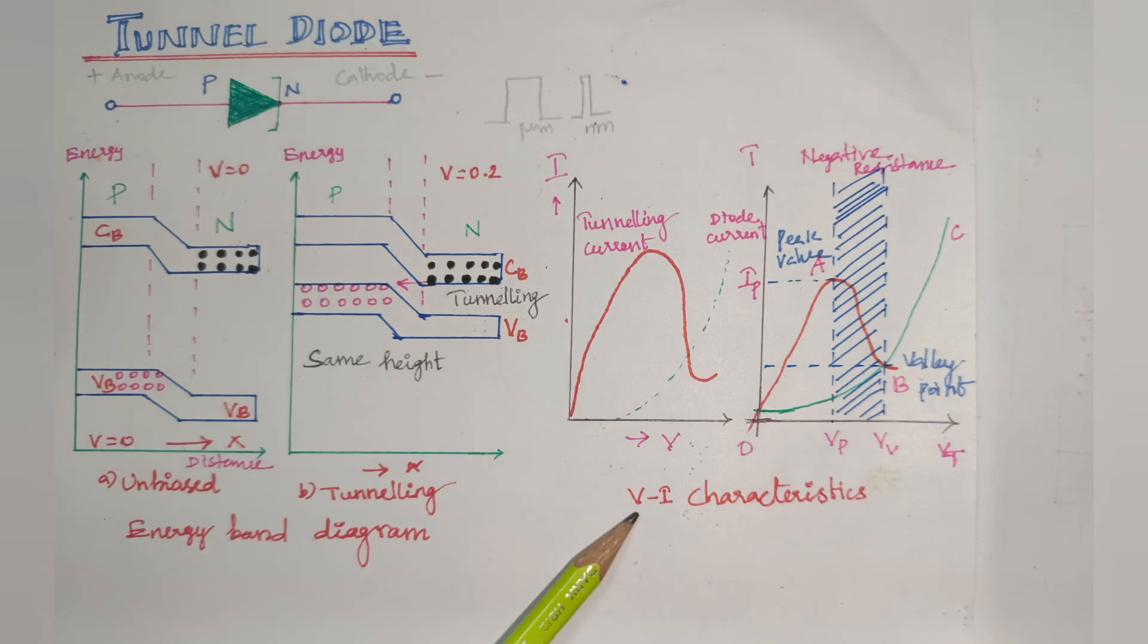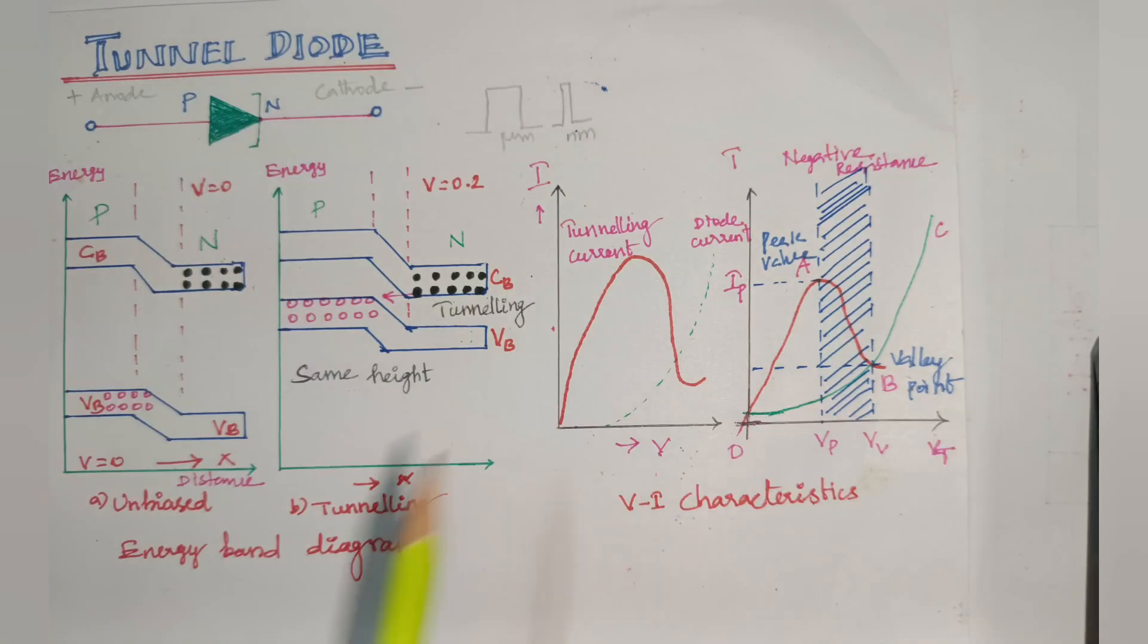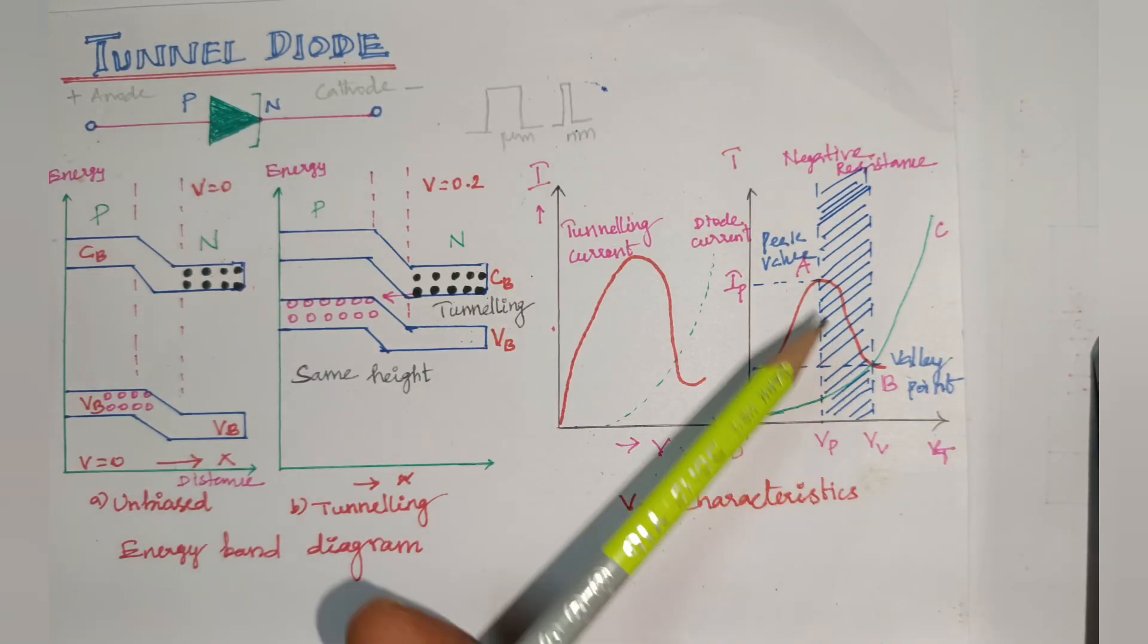Now we discuss the V-I characteristics, the voltage versus current characteristics. Here, forward bias produces immediate conduction. This point A to B is called negative resistance.